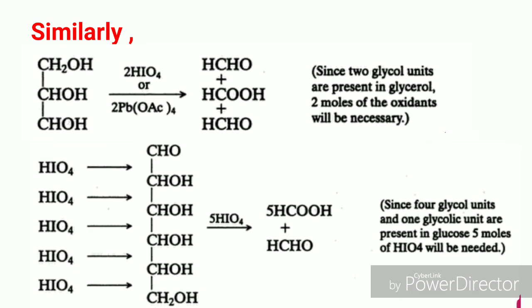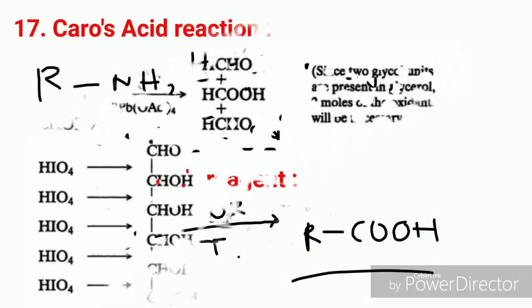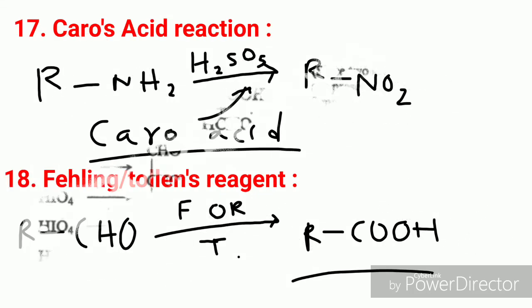The next is Caro's acid oxidation. Caro's acid is H₂SO₅, which selectively converts an NH₂ group to a NO₂ group.